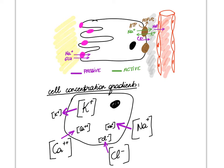Let's apply that knowledge to our picture. Here we're looking at our cuboidal cell with its microvilli. Here's our filtrate in yellow, our interstitial fluid in gray, and our blood in red. At the basolateral membrane of our cuboidal cell we have sodium-potassium pumps, which depend on hydrolysis of ATP to pump sodium against its concentration gradient out of the cell.